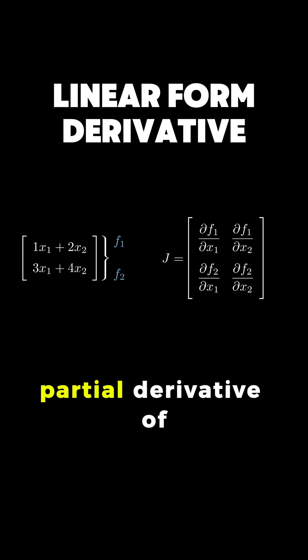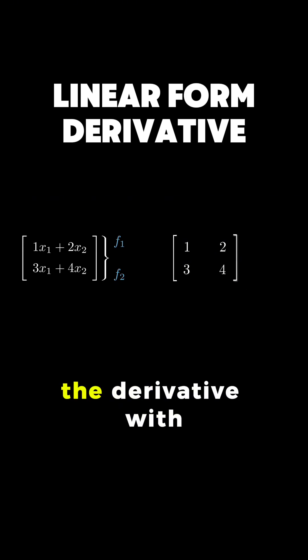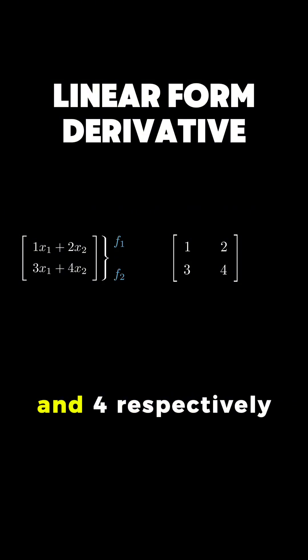We calculate the partial derivative of F1 with respect to X1 and X2 and do the same for F2. For F1, the derivative with respect to X1 is 1 and with respect to X2 is 2. For F2, we get 3 and 4 respectively.